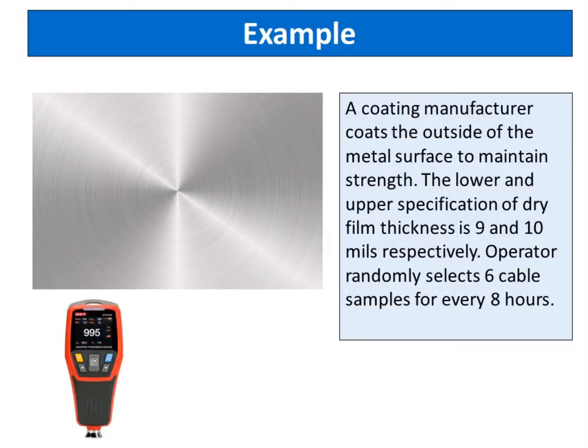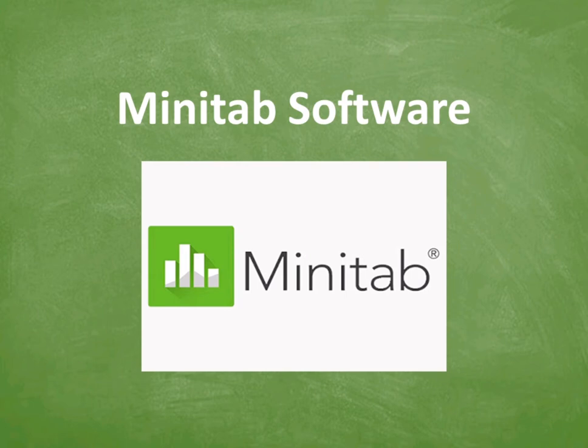Let's take an example. A coating manufacturer coats the outside of a metal surface to maintain strength. The lower and upper specification of dry film thickness is 9 and 10 mils respectively. The operator randomly selects six cable samples every eight hours. I am going to show you the steps of performing a process capability six-pack study based on the normal method using Minitab software.